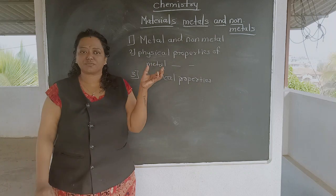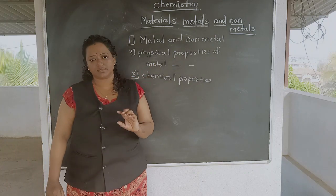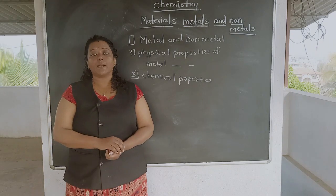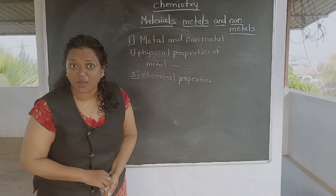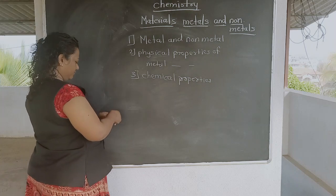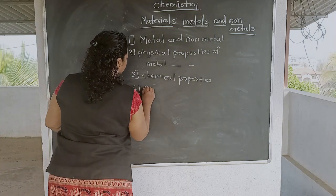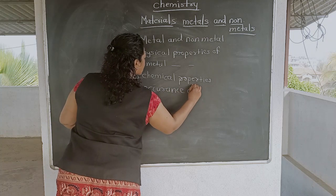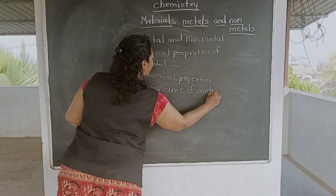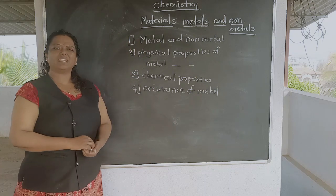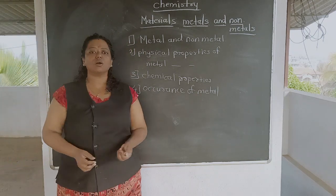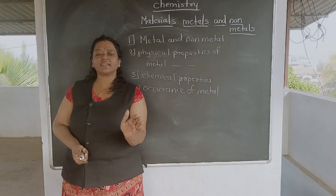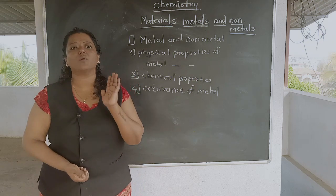The reaction of metals and non-metals we will learn, and then chemical properties. Now, where is the metal found? The fourth point is the occurrence of metal and non-metal. Occurrence means where exactly the particular metal is found, or in what form it is found.